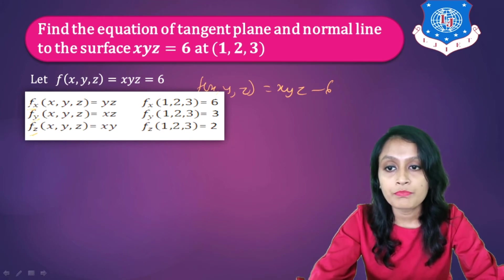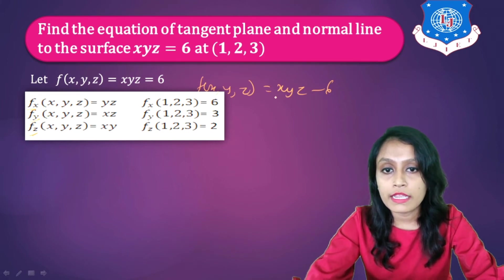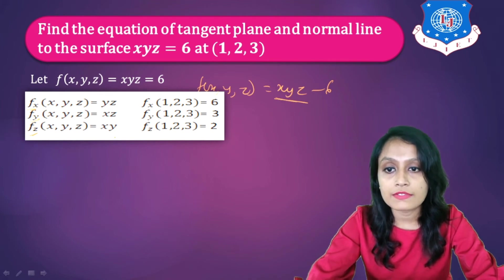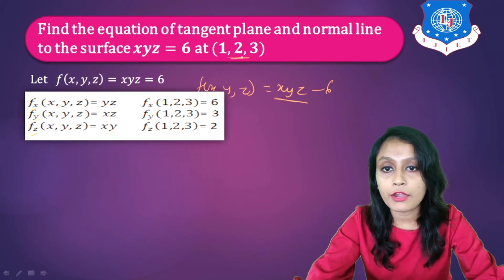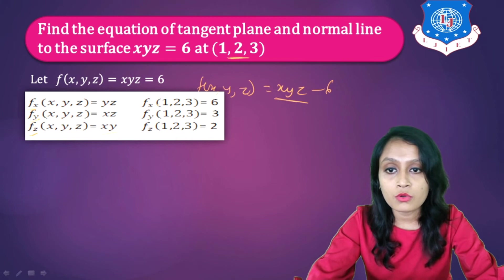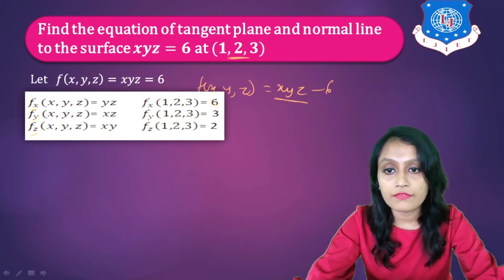Now we find the values at point P = (1, 2, 3). Fx at (1, 2, 3) = y·z = 2·3 = 6. Fy at (1, 2, 3) = x·z = 1·3 = 3. And Fz at (1, 2, 3) = x·y = 1·2 = 2. Now we know the formula of equation of tangent plane at point (1, 2, 3).